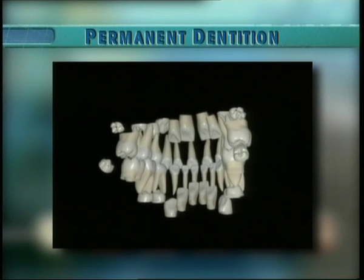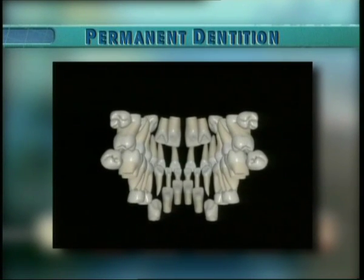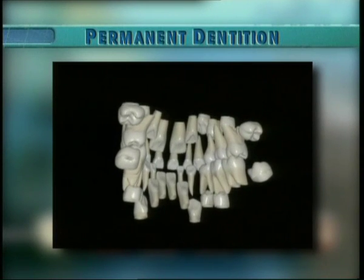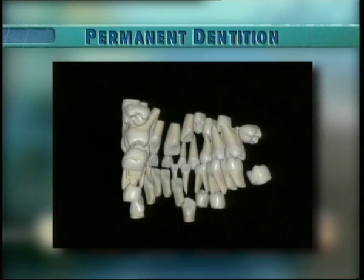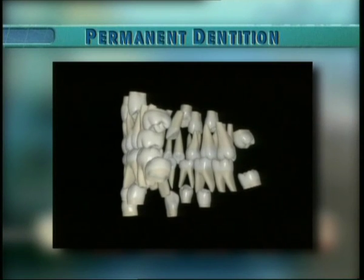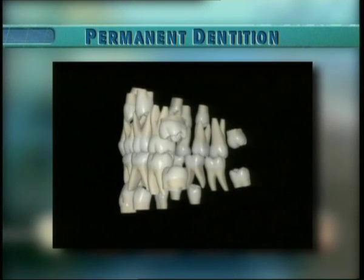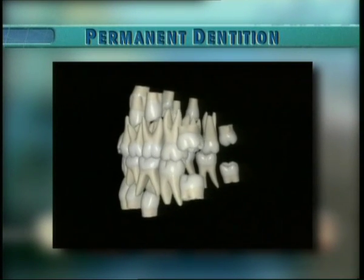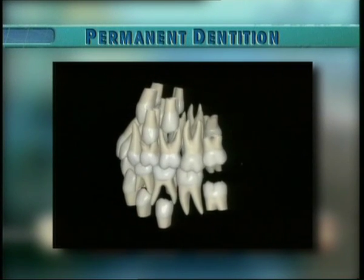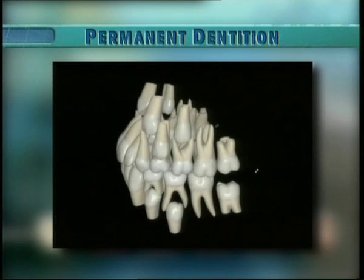Besides, permanent incisors are labially inclined during their formation, in their eruption, and in their final position. After the emergence of the permanent canines, the roots of the incisors move to the distal and the spaces between the incisors will close.